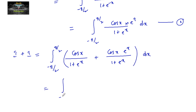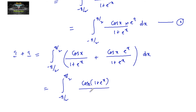This equals the integral from minus pi by 2 to plus pi by 2 of cos(x) times (1 plus e to the power x) upon (1 plus e to the power x) dx. We can cancel 1 plus e to the power x, leaving the integral of cos(x) dx, which evaluates to sin(x).